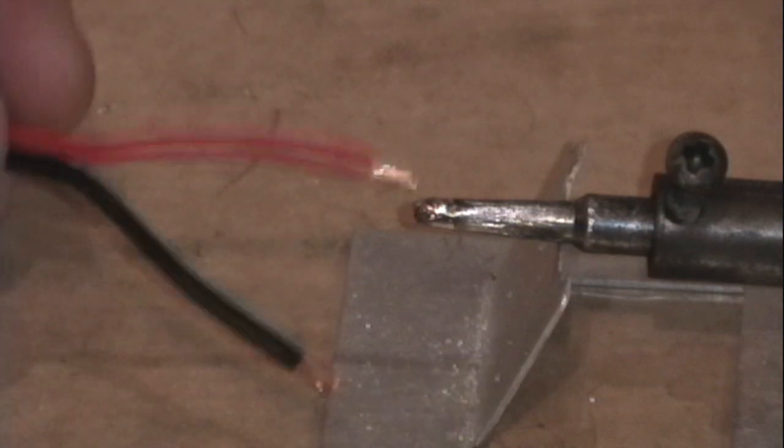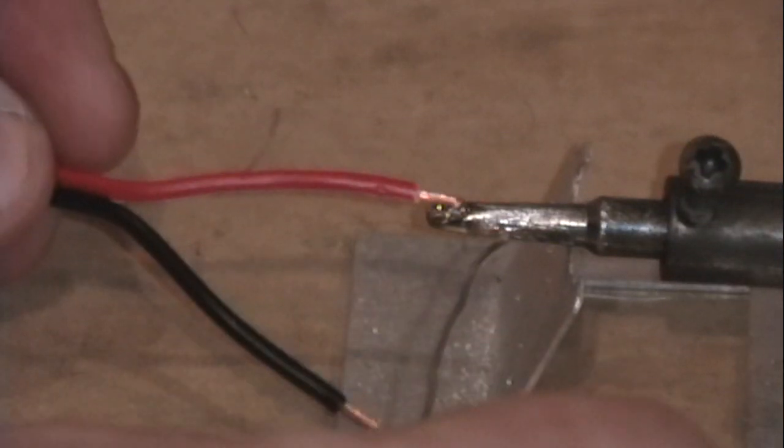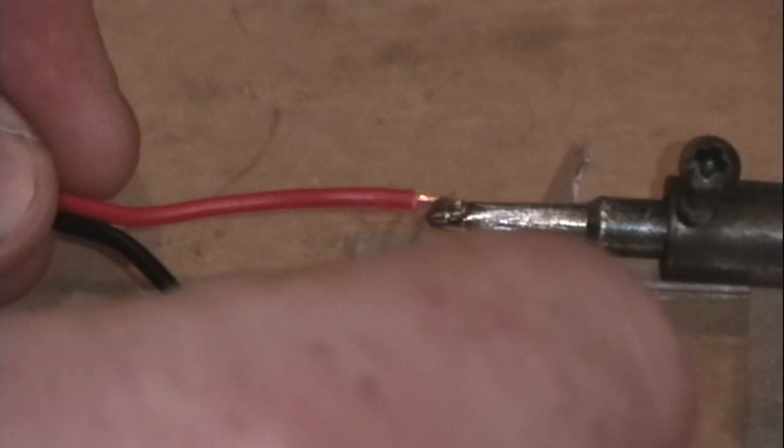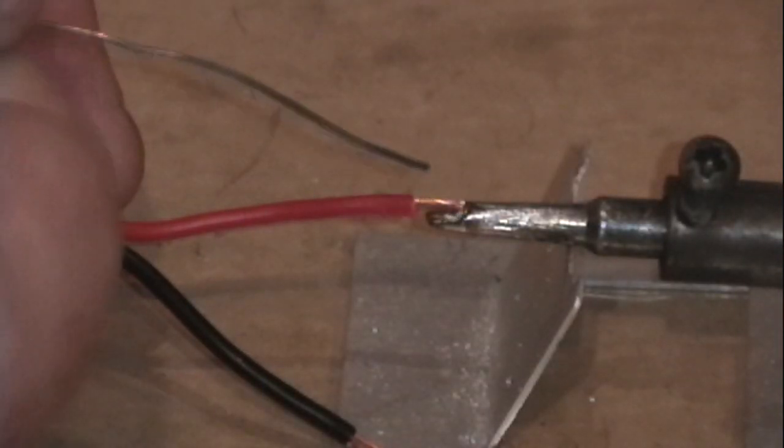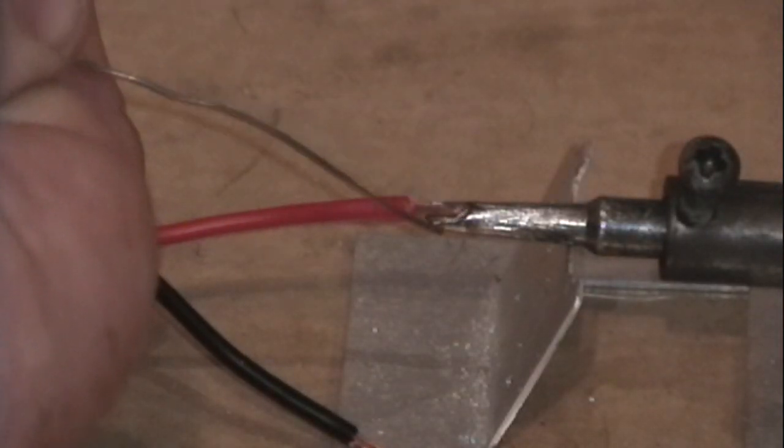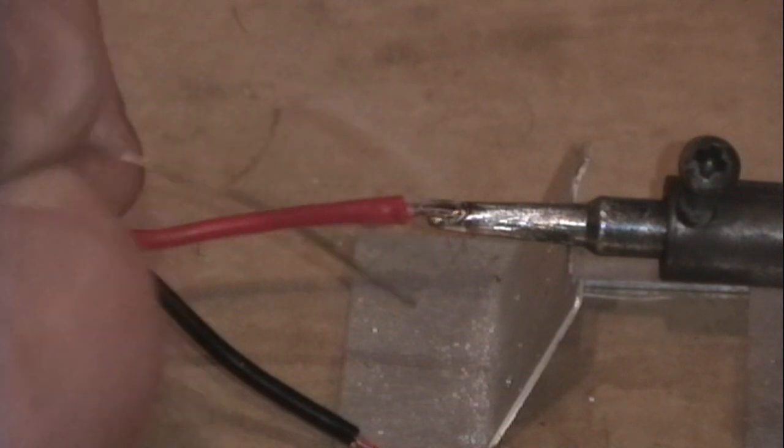Next, you will want to hold the wire to the soldering iron. Place the solder on top of the wire and wait until the wire heats up enough to melt the solder. You'll be able to physically see the solder melt into the wire.